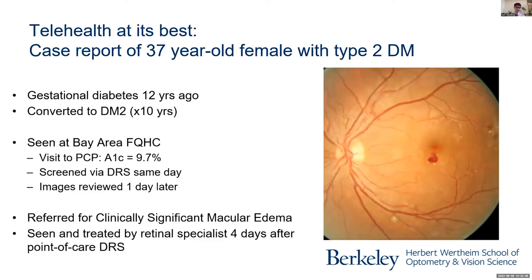Just a couple of cases to show you what telehealth at its best looks like when it's running on all pistons. This is a case of a 37-year-old female — a very young patient with type two diabetes — seen at an FQHC in the Bay Area. She was seen by her PCP and screened that same day with the retinal camera. The images were reviewed by an optometrist consultant with UC Berkeley one day later, and she was referred for macular edema. Four days later she was seen by a retinal specialist and treated. Her vision remains 20/20 after that. Had she not been treated, there's a very high chance she would have had permanent vision loss.